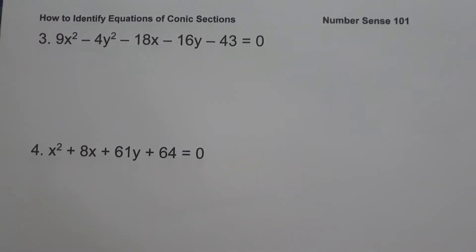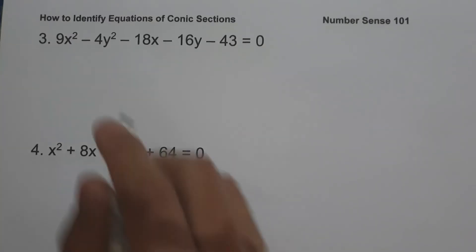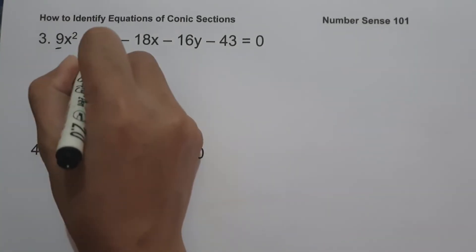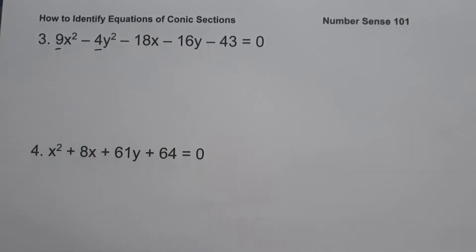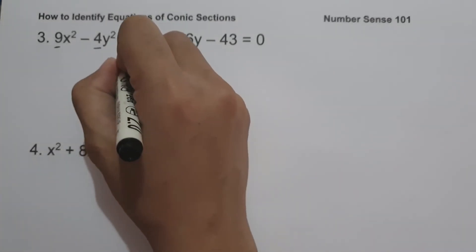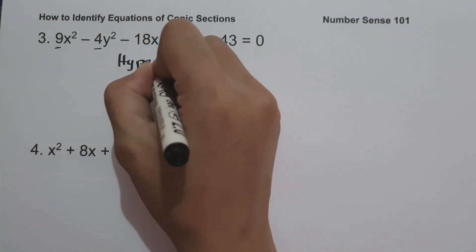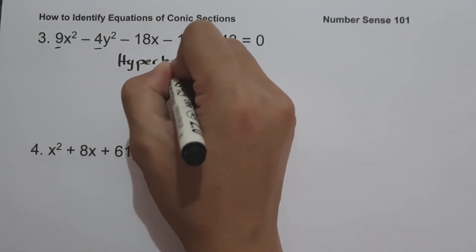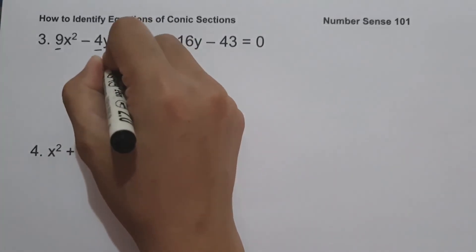On example number three: 9x² − 4y² − 18x − 16y − 43 = 0. Since the coefficient of x² is not equal to the coefficient of y², and at the same time they don't have the same sign, we can say that this equation is a hyperbola.